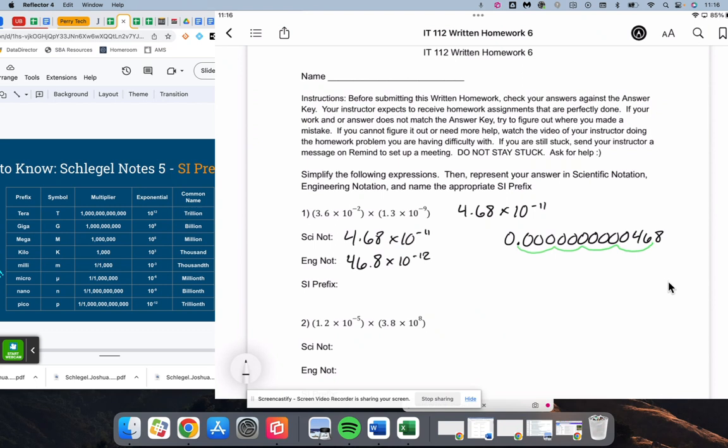The SI prefix for that is pico. 46.8 pico something, like picograms or pico whatever.